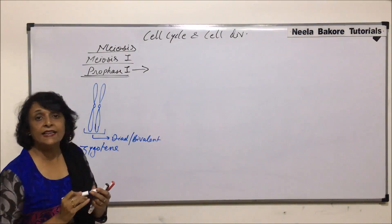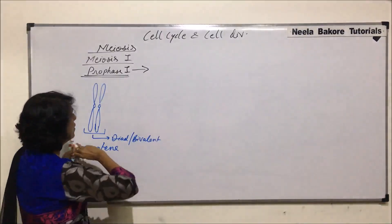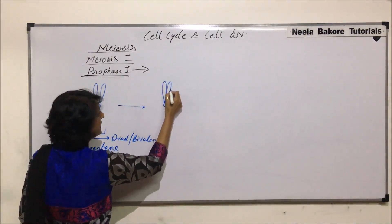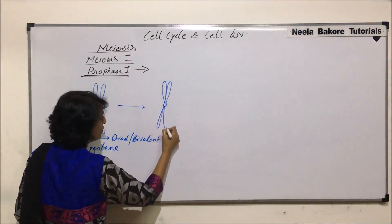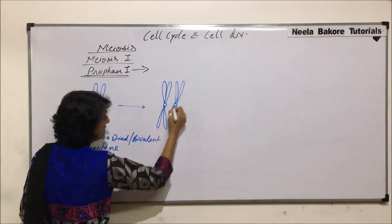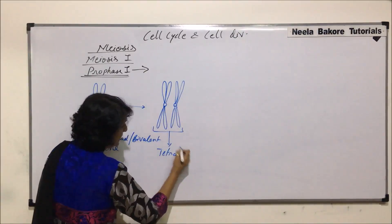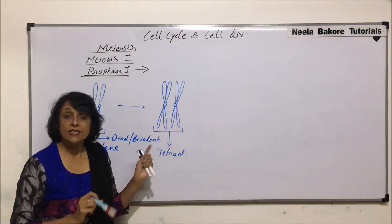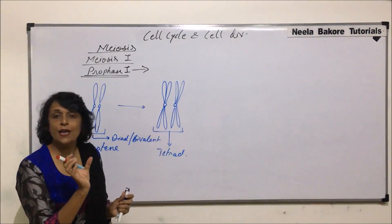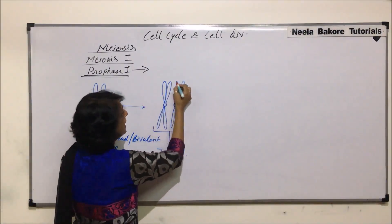Now, each chromatid undergoes vertical splitting to form two arms. This is the stage known as the tetrad stage, and the name is given because of these arms. The synaptonemal complex is already formed so that this structure can be kept together and held together.